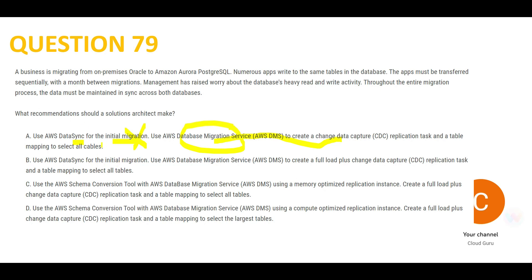Option B is also wrong — it similarly says to use DataSync for initial migration and DMS for full load and change data capture. Now looking at C and D: both use the Schema Conversion Tool with DMS for the one-time move, which is correct. Both are correct in the first part; the difference is in the second part.